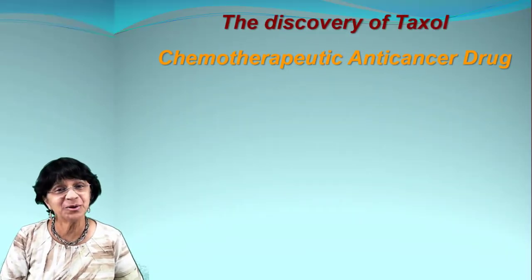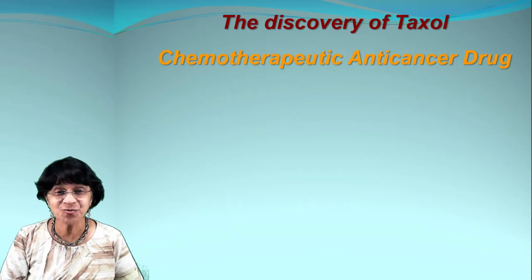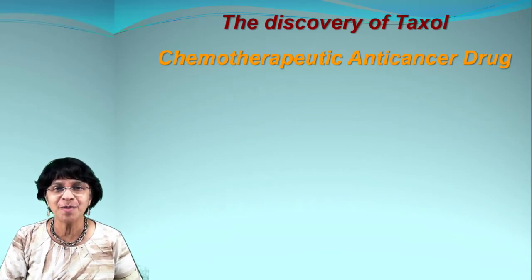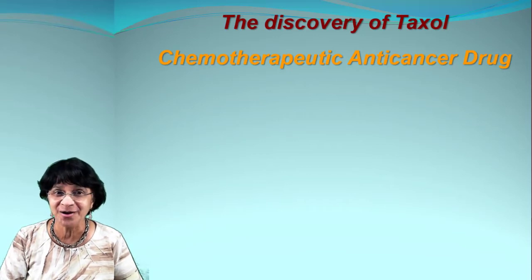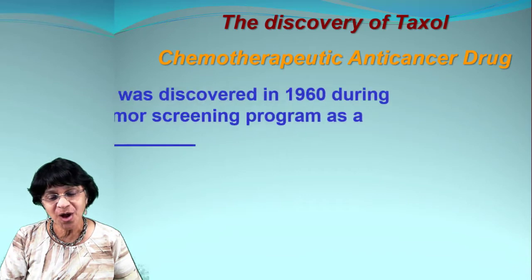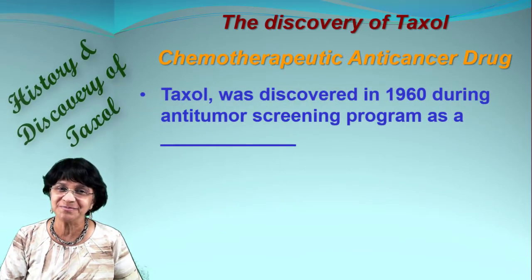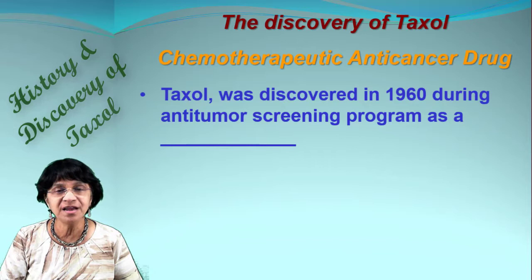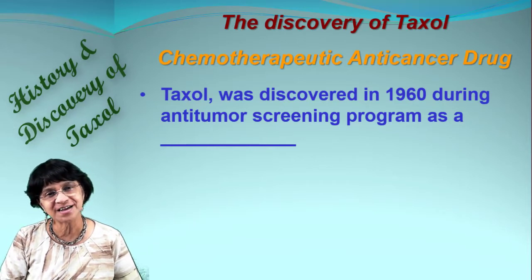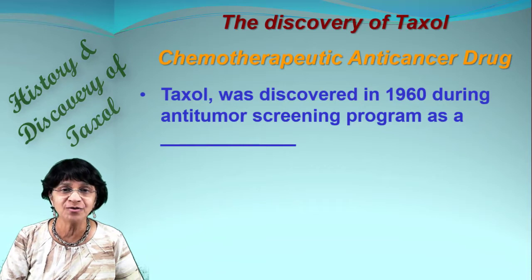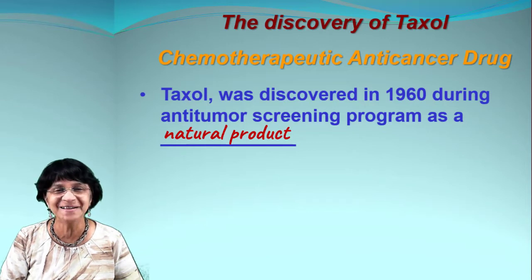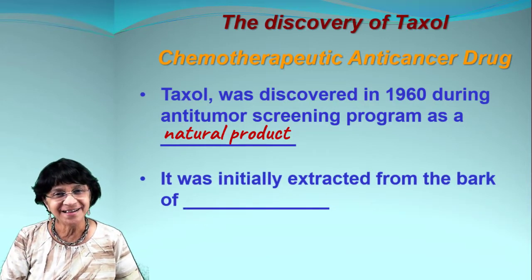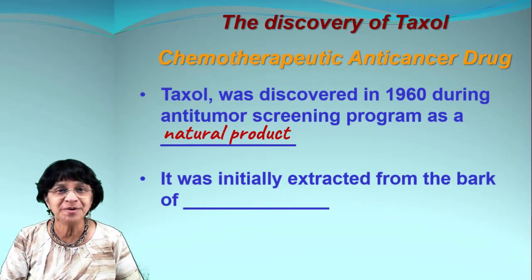In this video we will talk about taxol — a unique compound and drug known to have anti-cancer properties. Its discovery started in the 1960s through a big screening program for finding anti-tumor agents, and taxol was extracted as a natural product, meaning it was obtained from natural resources.